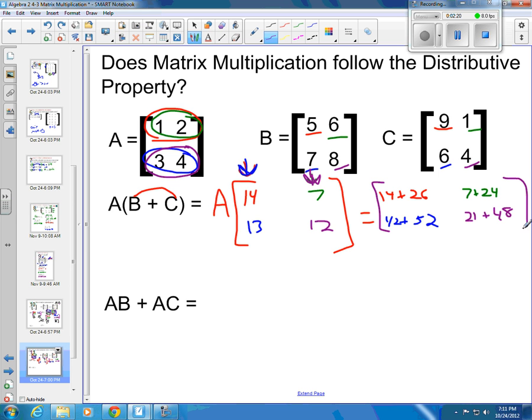Add up each element and we have our answer, our result matrix. So 14 plus 26 would be 40. And then 7 plus 24 would be 31. 42 plus 52 is 94, and 21 plus 48 would be 69. Okay, then we're ready to do more work.